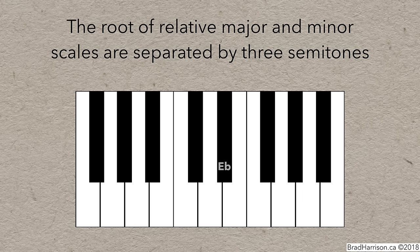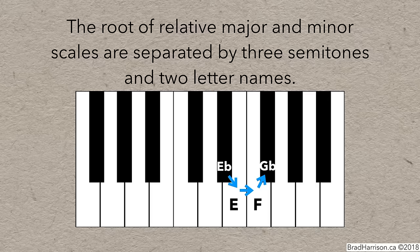It works backwards, too. To find the relative major of E flat minor, go up three semitones: E flat to E, E to F, F to G flat. G flat major is the relative major of E flat minor. Also, relative major and minor are separated by two letter names — in this case, E goes to F and then to G. Things get confusing if you try to compare E flat minor and F sharp major, so be careful.